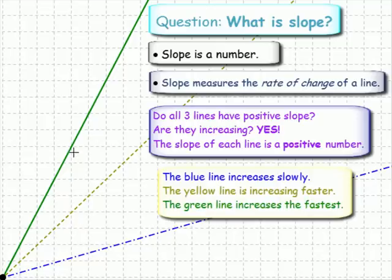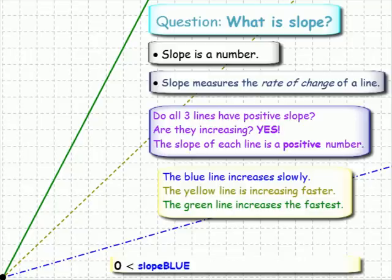So all three slopes are positive, but the slope of blue is smaller than the slope of yellow, which is smaller than the slope of green. That is, the slope of green is bigger than the slope of yellow, which is bigger than the slope of blue, which is bigger than zero.